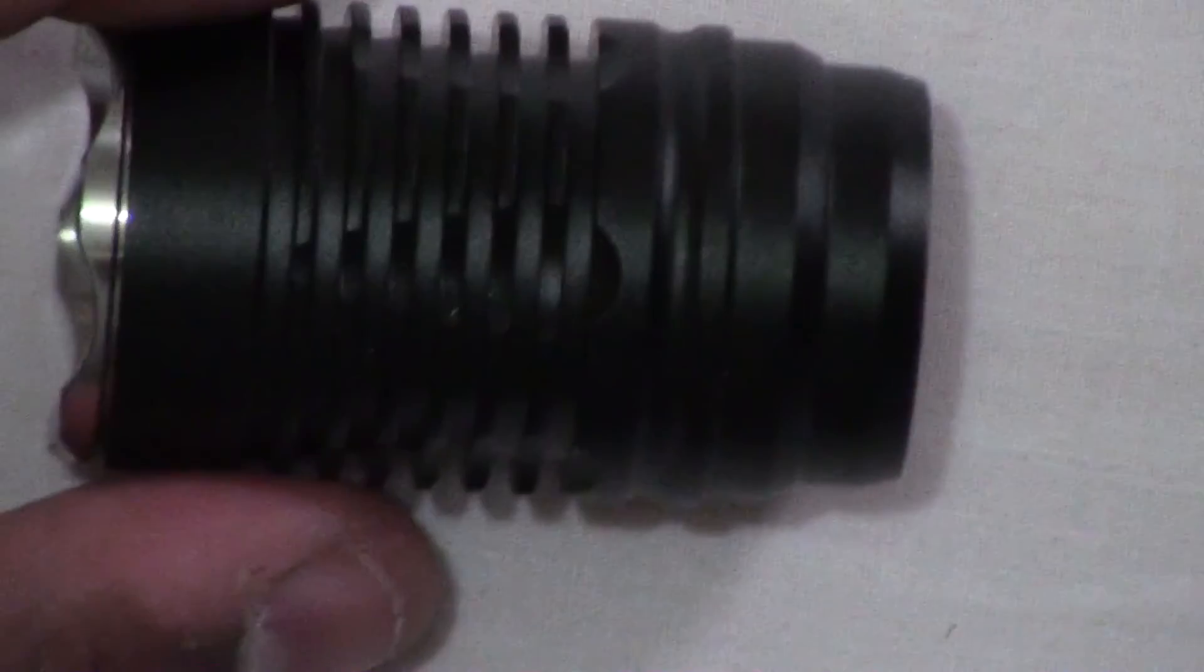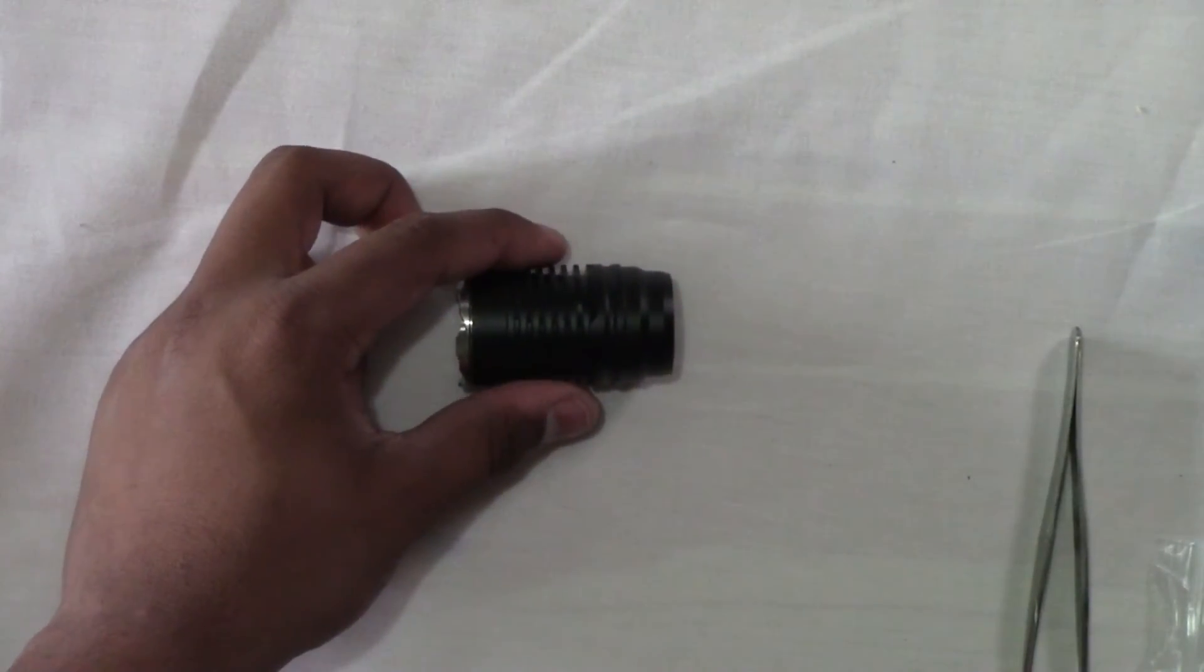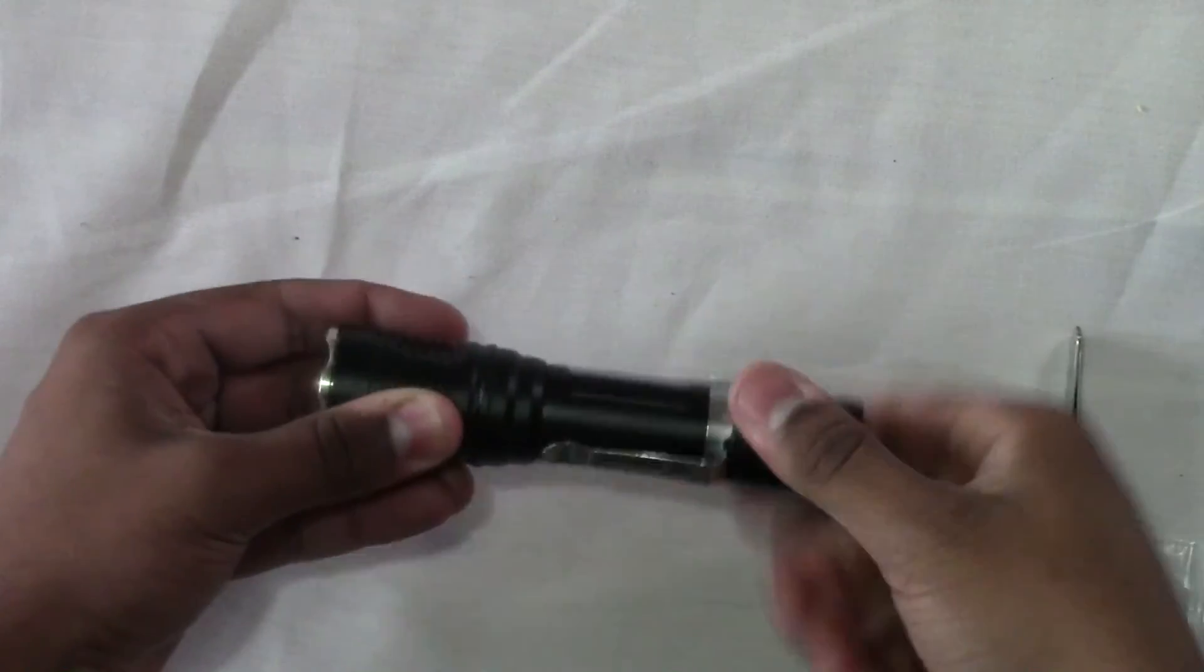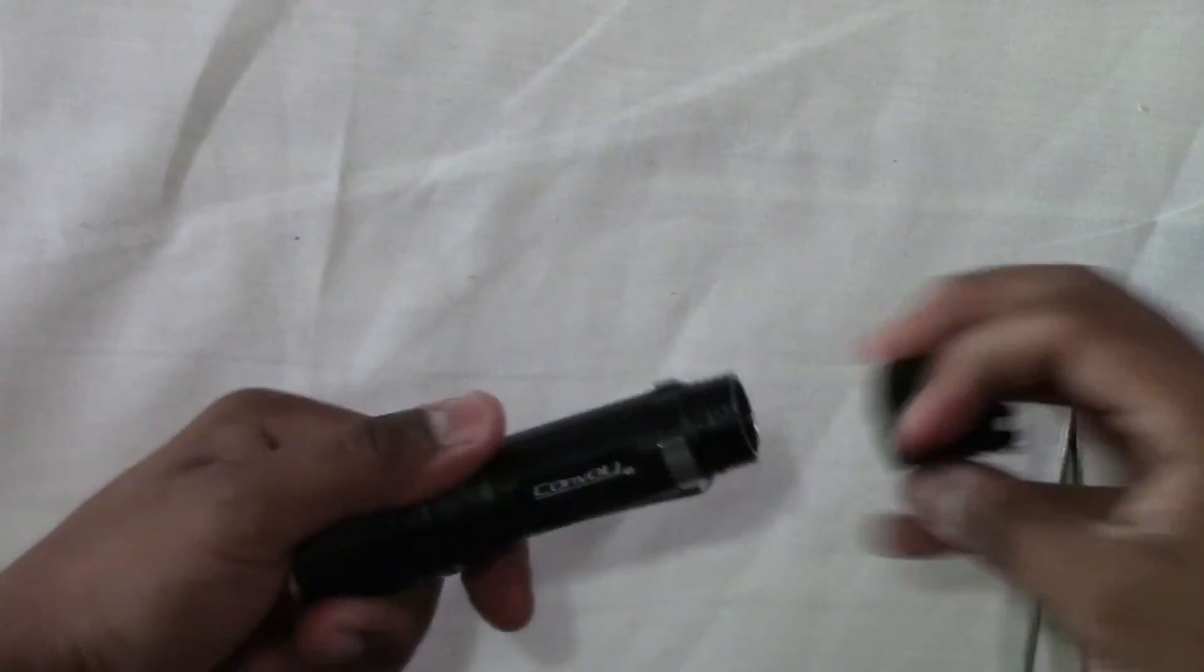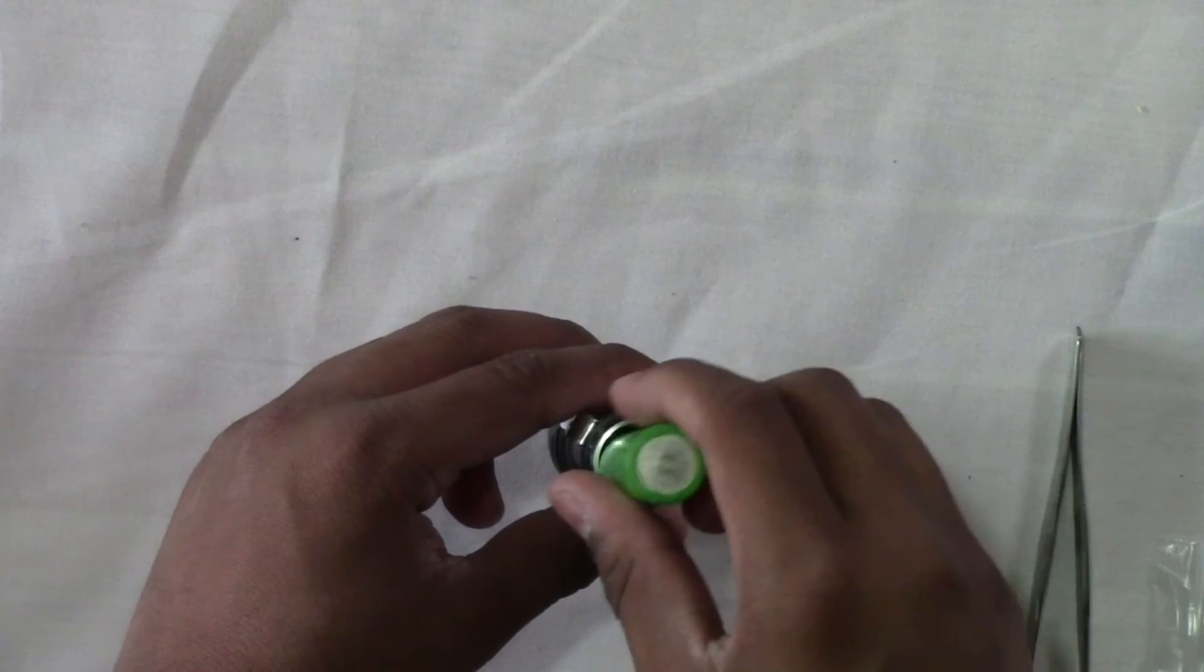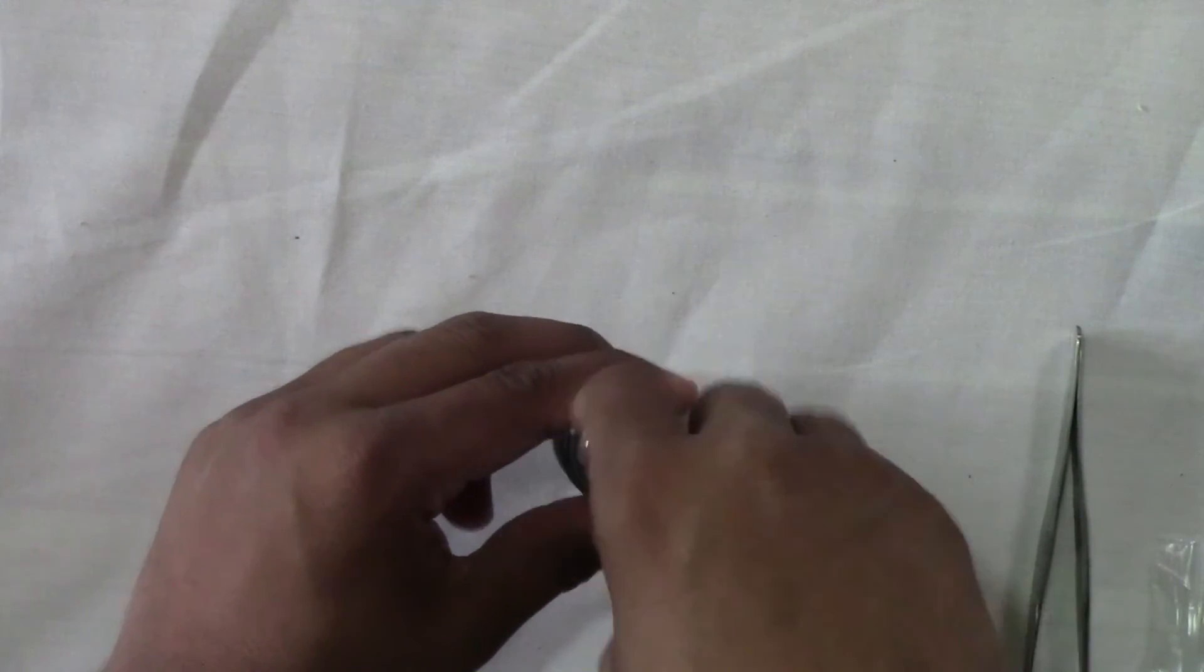Now we have the entire, this is basically the build finished. Now we'll take the battery tube, screw it on, unscrew the end, put a battery in, put it in the right way. Turn it on, and there we go.